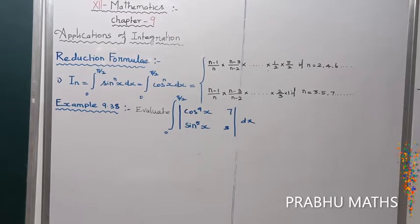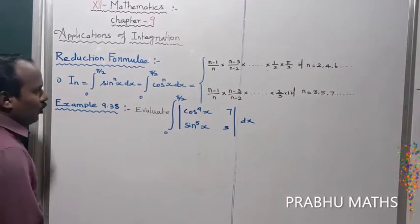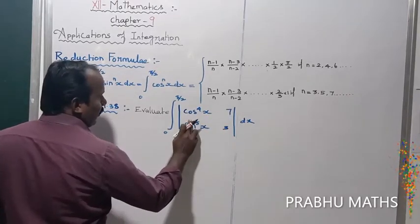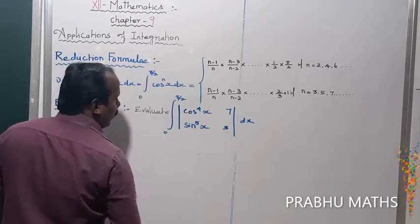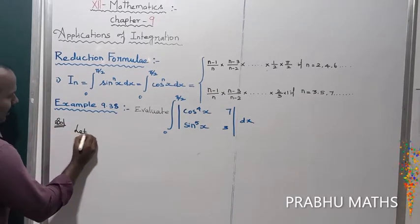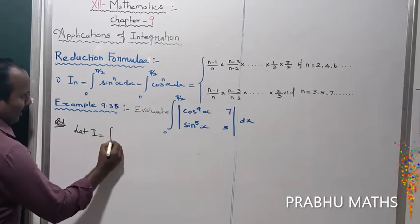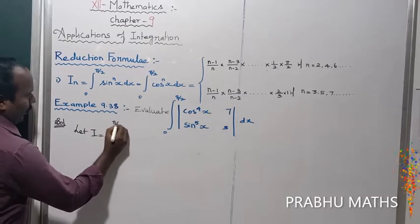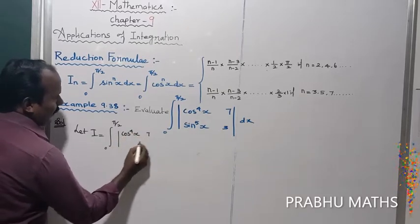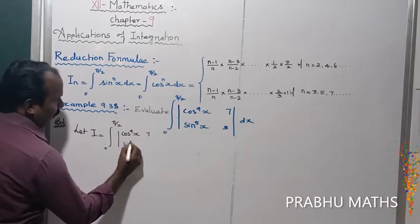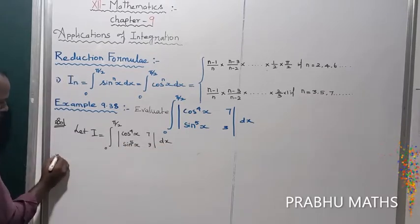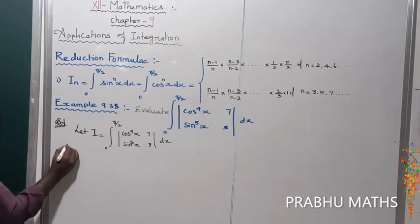Example 9.3: Evaluate the integral from 0 to 5/2 of the determinant with cos⁴x and 7, sin⁵x and 3, into dx. First of all, let us consider the given integral value I equal to the integral from 0 to 5/2 of the determinant, where cos⁴x is 7 and sin⁵x is 3, into dx.